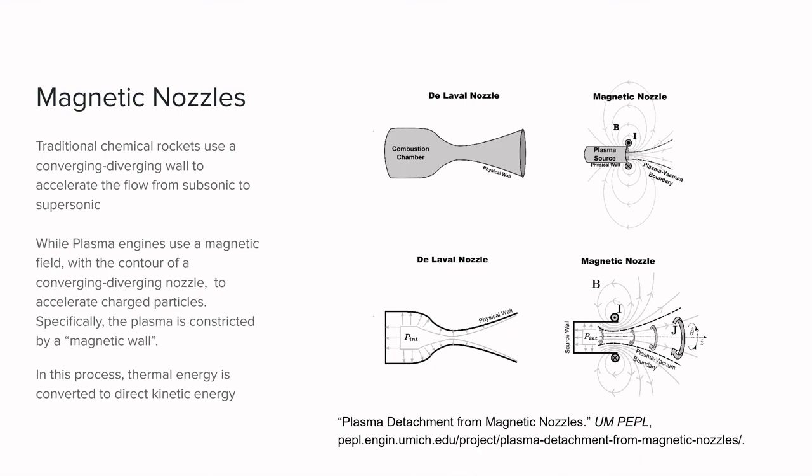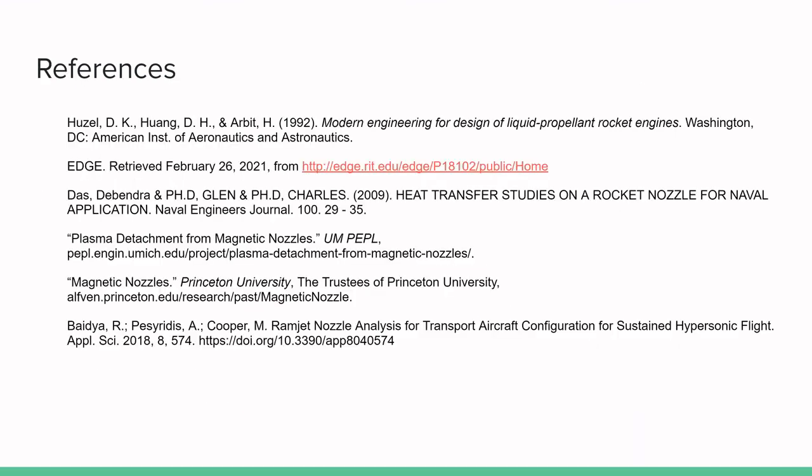we essentially use a magnetic wall to constrict the plasma and accelerate charged particles from subsonic to supersonic. In this process, we're also converting thermal energy directly into kinetic energy. Now, that's the end of our presentation. Thank you, everyone, for listening.